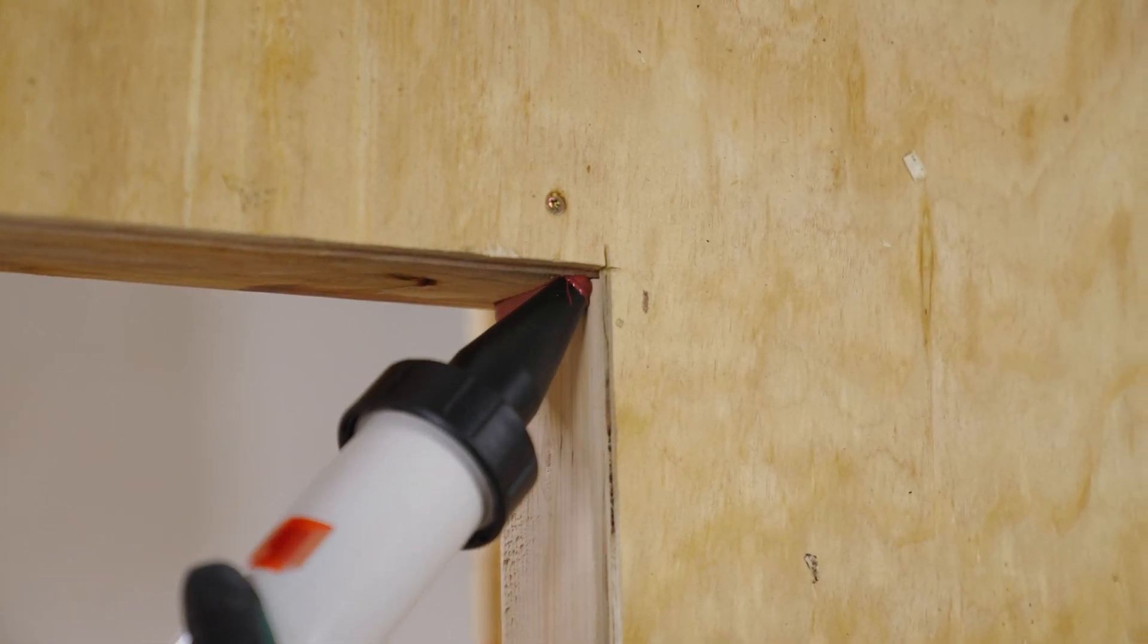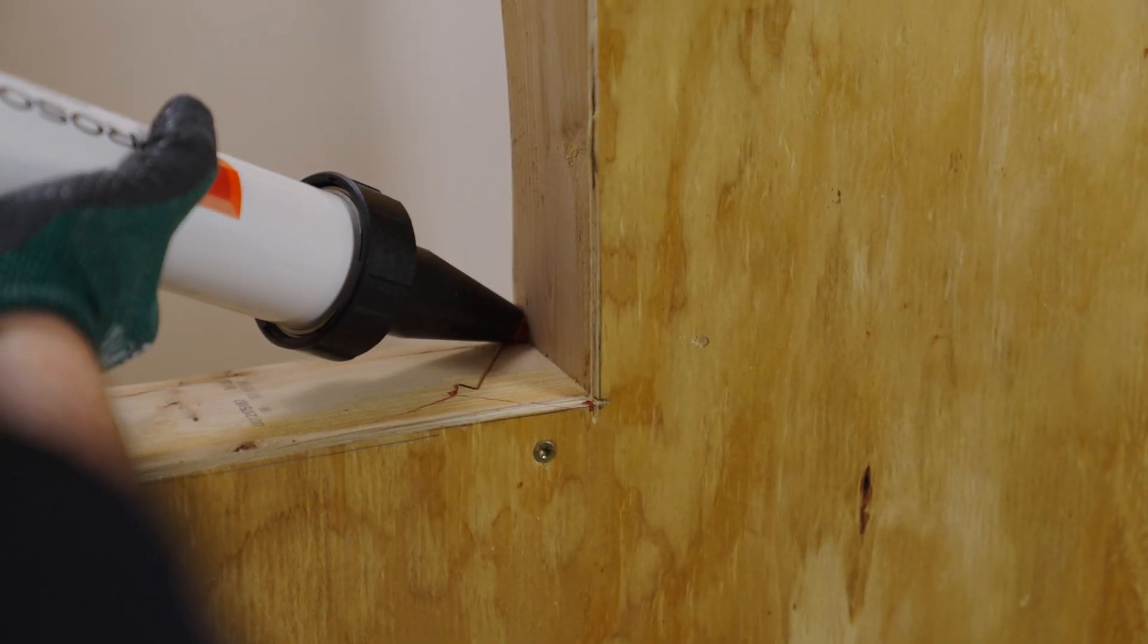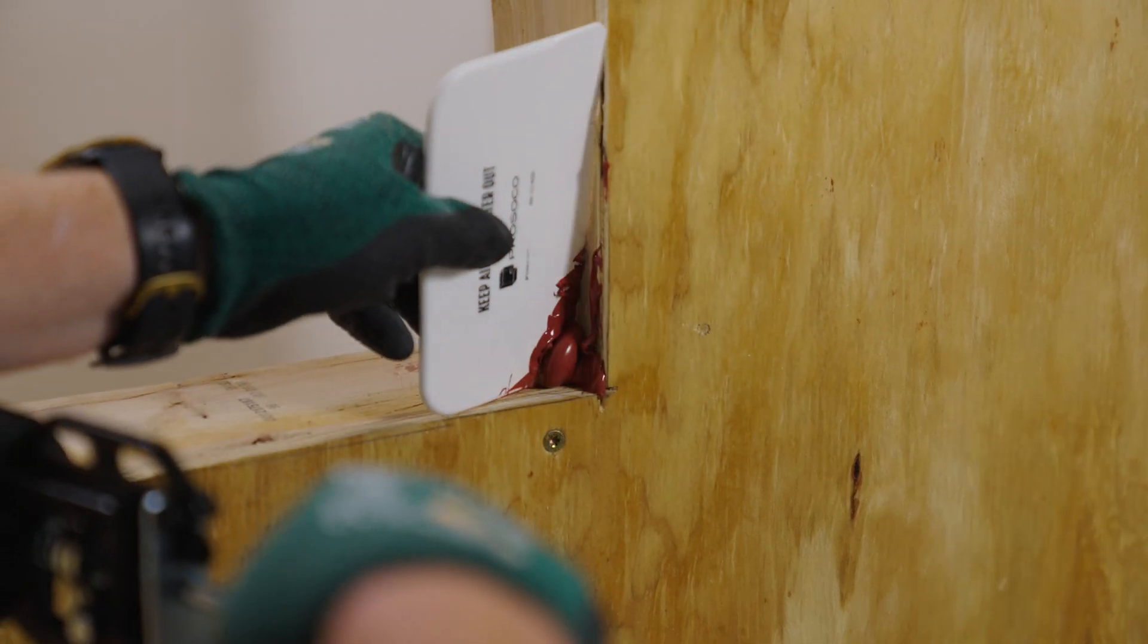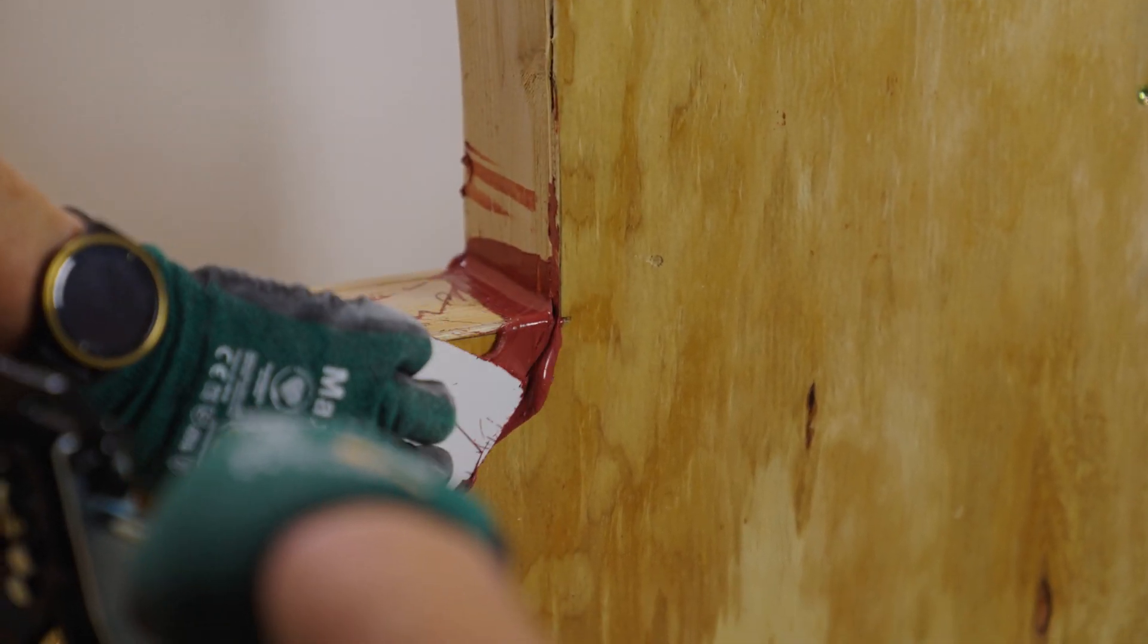When you first start a rough opening, you want to strike the corners. Run a little bead of gun grade into the corner and strike it. The main purpose is to create a 45-degree angle instead of 90.